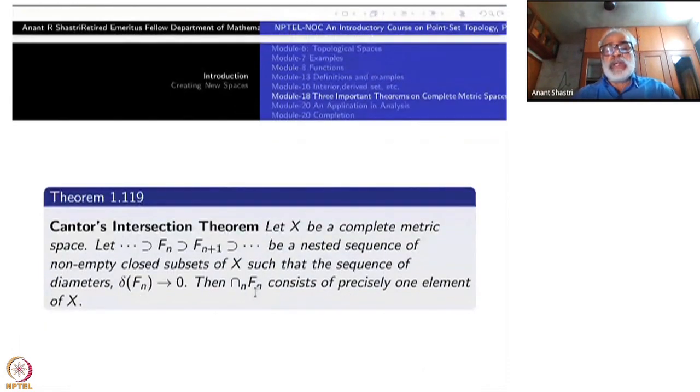So let us begin with freezing this symbol X, d or just X for a metric space once for all in this section. The first theorem, Cantor's intersection theorem: start with a complete metric space, take a nested sequence of non-empty closed subsets of X. Nested means one contained in the other, F_n containing F_{n+1} and so on.